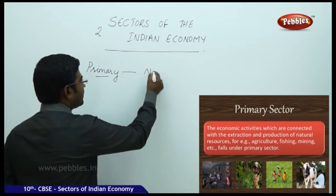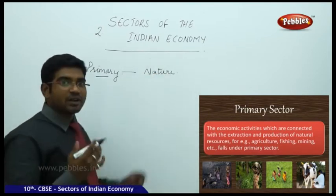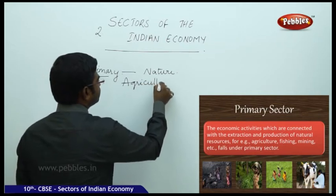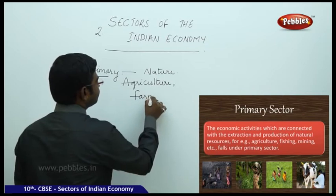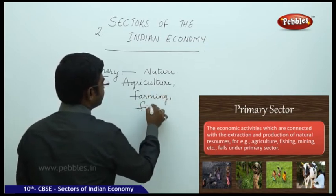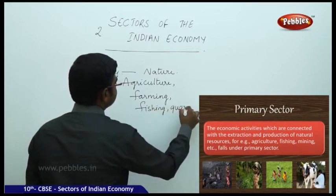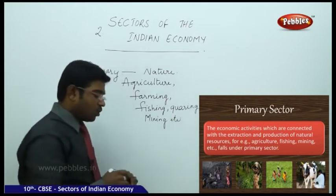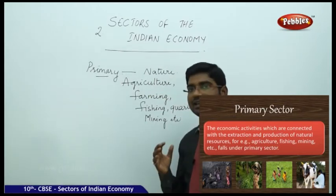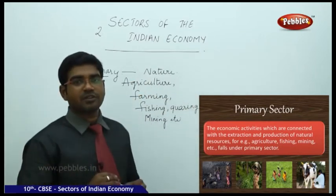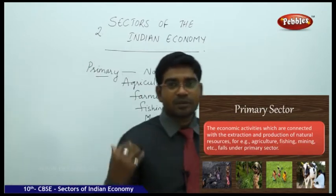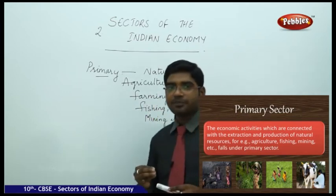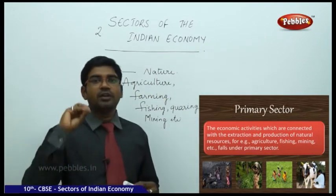Primary means depending on nature. The sectors that come under primary are agriculture, farming, fishing, quarrying, mining, etc. In India, nearly 70% of Indians depend on the primary sector. Most Indians, even today, are depending on the primary sector. We call it the primary sector because people are directly getting access to and exploiting nature. That is why it is called the primary sector, and most of the people are dependent on it.